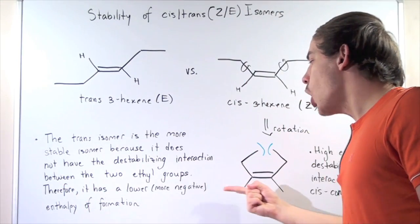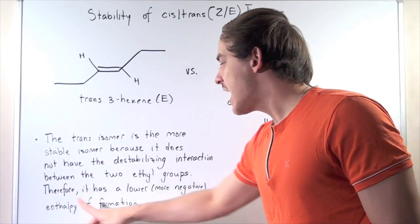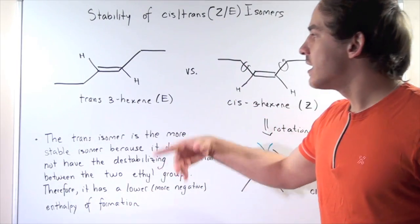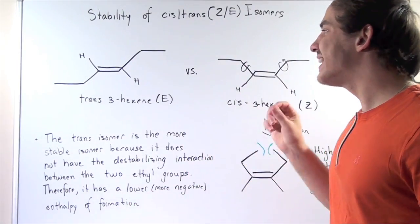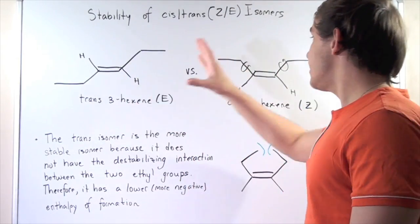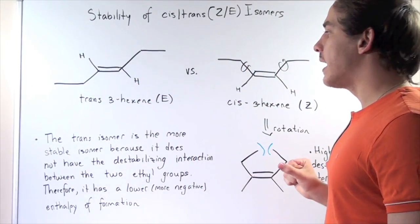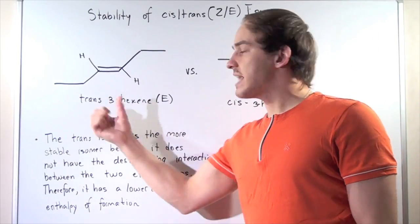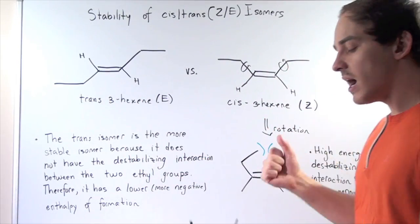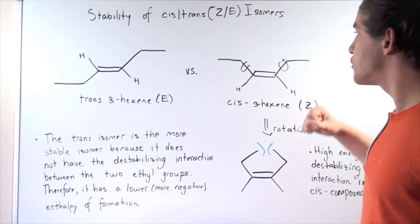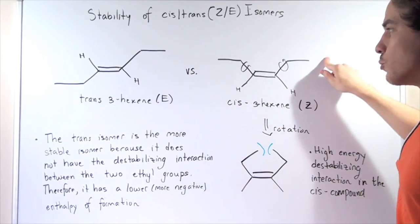Therefore, it has a lower or more negative enthalpy of formation. There is a difference of about one kilocalorie per mole of energy between this guy and this compound. And this one is more stable than the cis because there's no interaction between these two large ethyl groups.